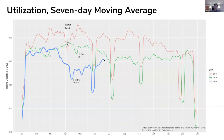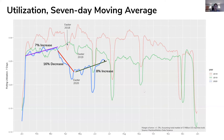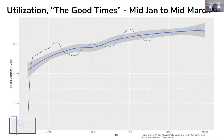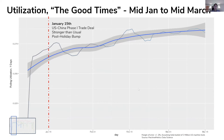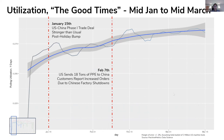Let's just look at 2020. What we've seen over the last couple months is a 7% increase from the beginning of the year until the coronavirus really hits the US, then about a 16% decrease from mid-March to mid-April, and then an 8% recovery from mid-April until present. Let's call mid-January to mid-March the 'good times.' On January 15th, the US and China signed a phase one trade deal, resulting in a stronger-than-usual post-holiday bump in utilization.